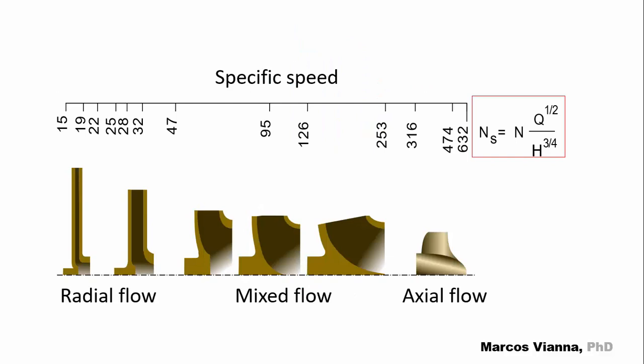Take a look at this diagram. It shows the variation of the specific speed with the impeller type. But to find its value, the flow must be in cubic meters per second, the head must be in meters, and the pump speed must be in RPM.